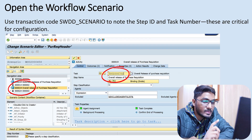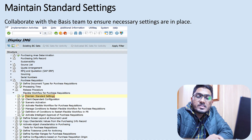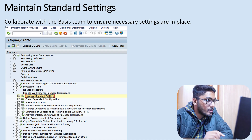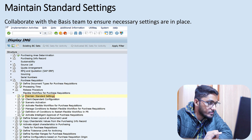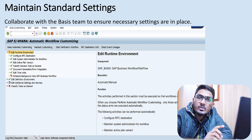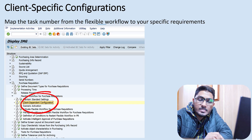The next step is maintaining standard settings. For this you have to go to OLME, then Purchase Requisitions, then Maintain Standard Settings. You need to inform the basis person — they will activate all these things. The next step is client-specific configurations.